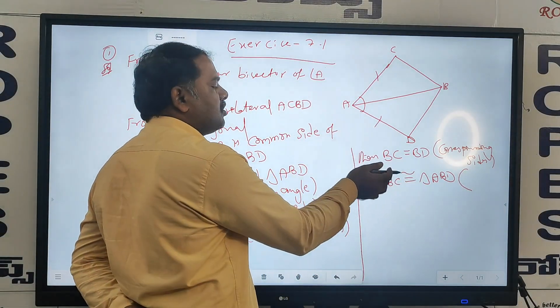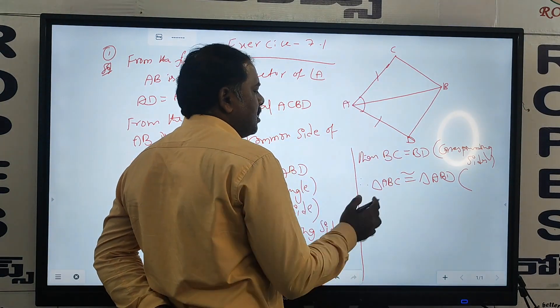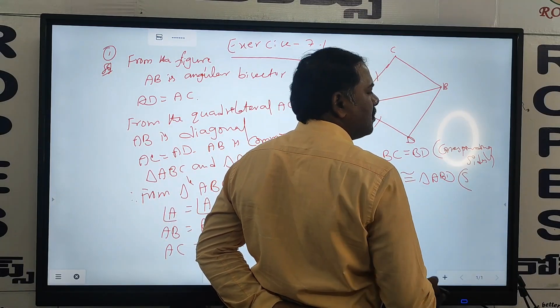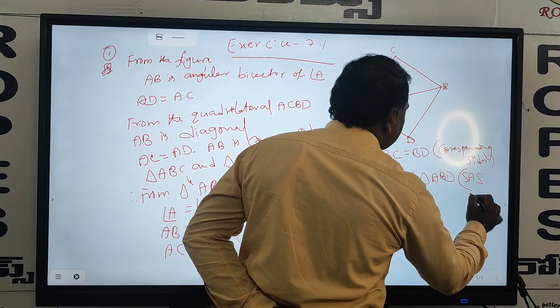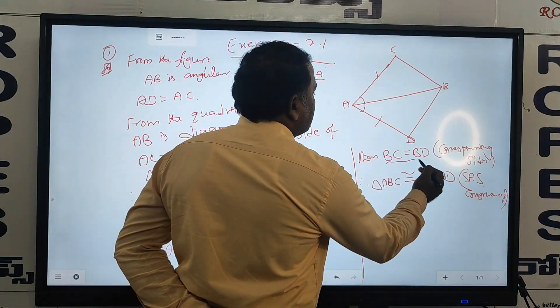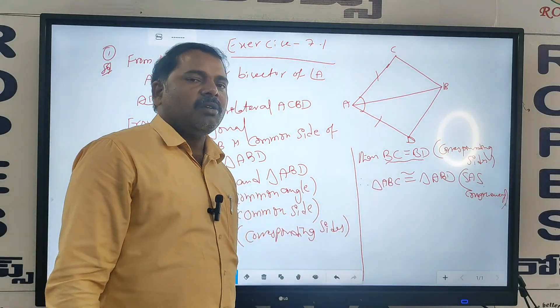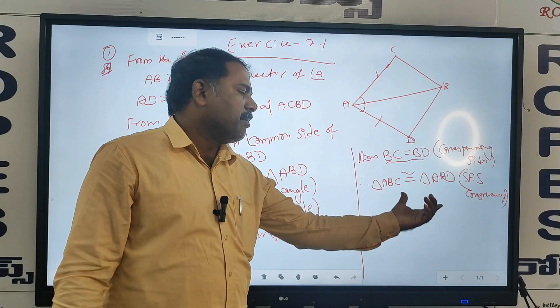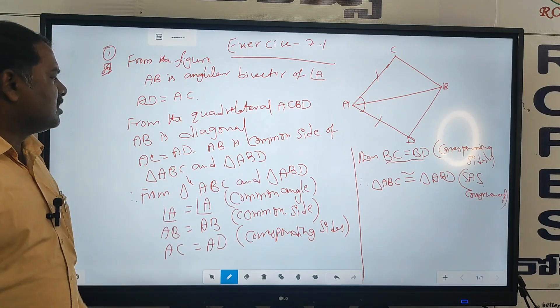It is by SAS congruence — side, angle, side. This side and this side, so this is SAS congruency. Based on SAS congruency, this is proved. Here BC is equal to BD. They also asked in the question: what can you say about BC and BD? Triangle ABC and triangle ABD are congruent triangles.